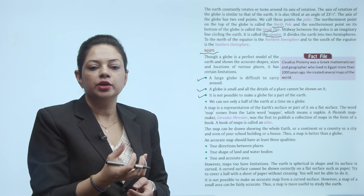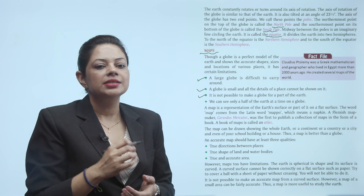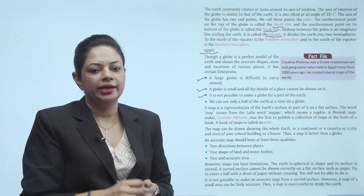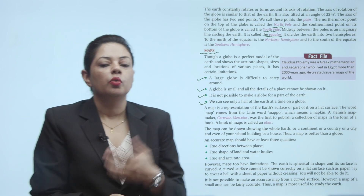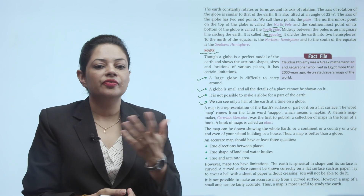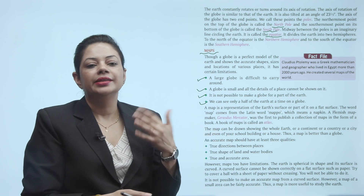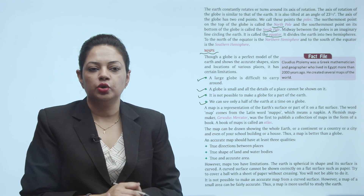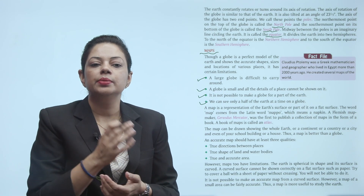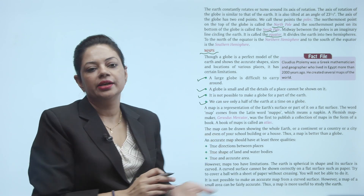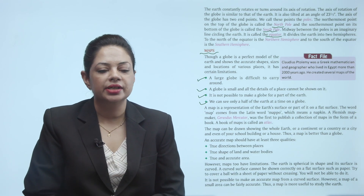Agar hum globe se Earth ki study karte hain, toh ek time mein hum Earth ka sirf ek hi face dekh paate hain. These are the limitations — isliye nayi cheezein invent hui jisko map bola jaata hai. Map par globe ki saari limitations cover ho sakti hain.